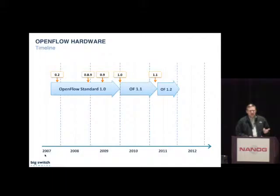Here's a rough timeline of the OpenFlow specification from 2007 to today. OpenFlow 1.2 has actually been approved by the Open Networking Foundation, but it's currently in an embargo period where it's not public yet — that should change in the next month or so.